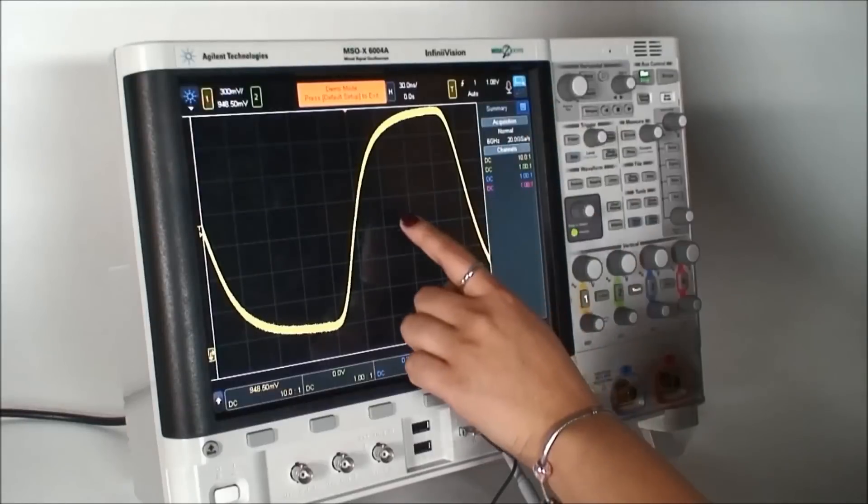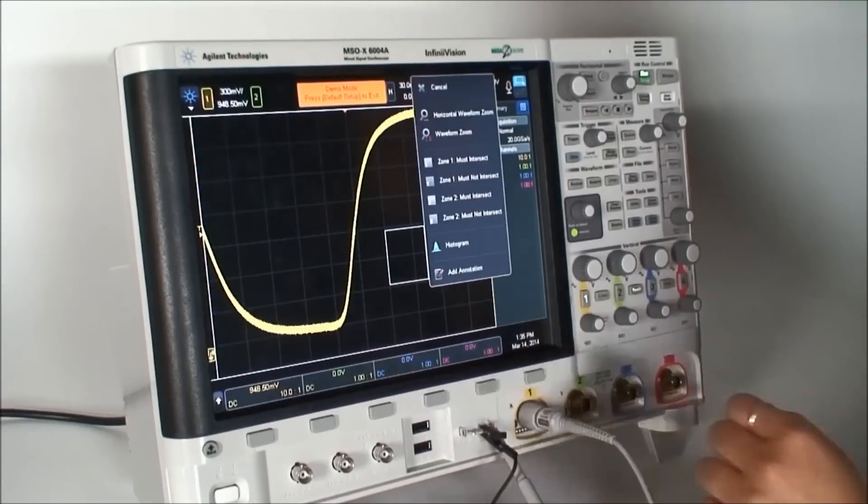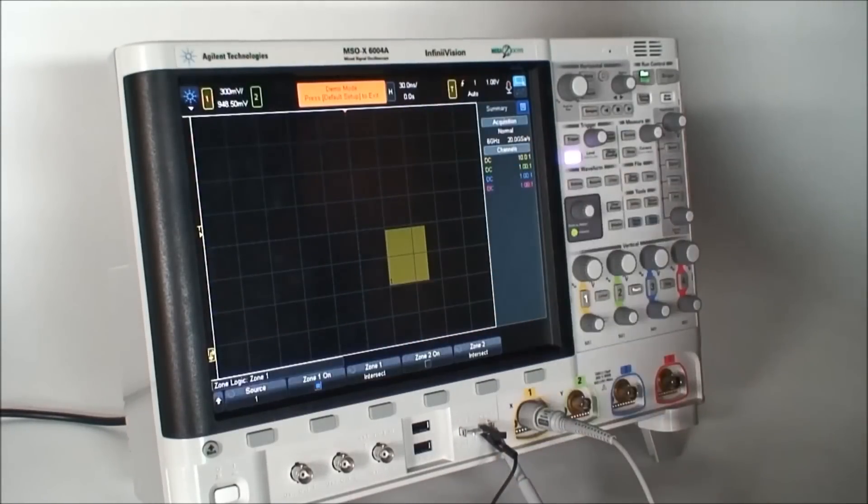The next step would be to isolate or trigger on it so that we can characterize the glitch to determine the root cause. We can use InfiniScan zone triggering to isolate this glitch by simply drawing a box in the region that the glitch is occurring, and select zone 1 must intersect.